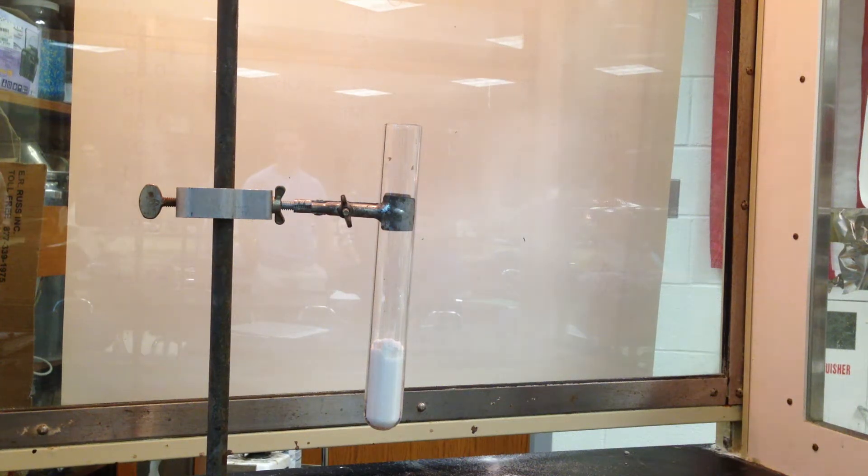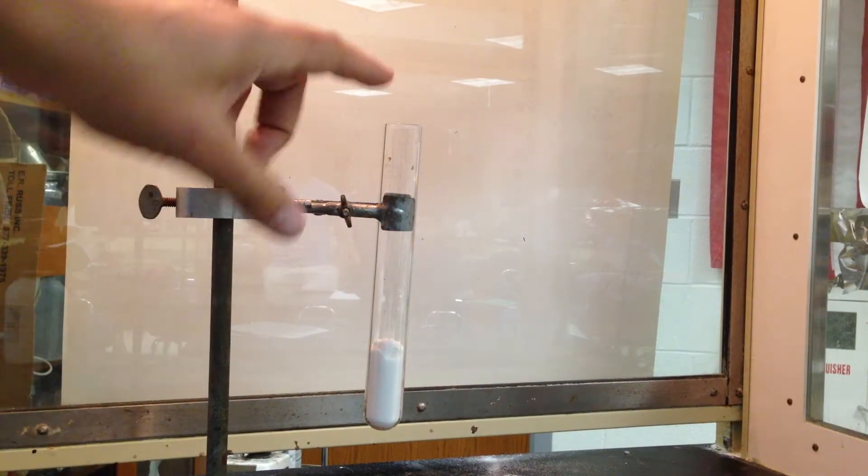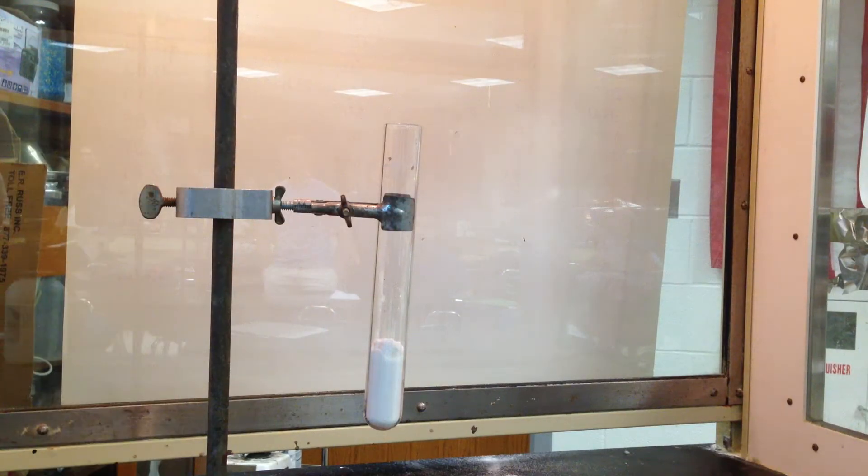So here we have the world-famous gummy bear potassium chlorate demonstration. And what I have in the fire tubes, which are very thick-walled test tubes, is potassium chlorate, KClO3. And as you probably have learned, or will learn, KClO3 is a strong oxidizing agent.